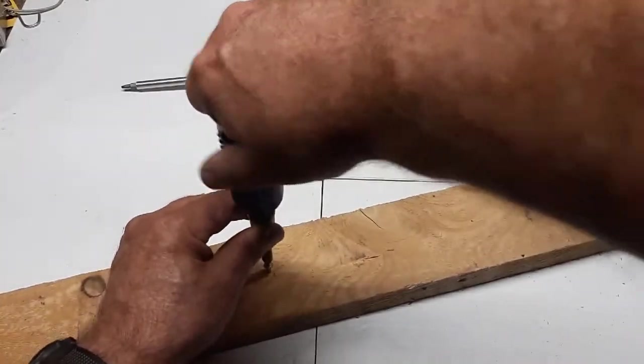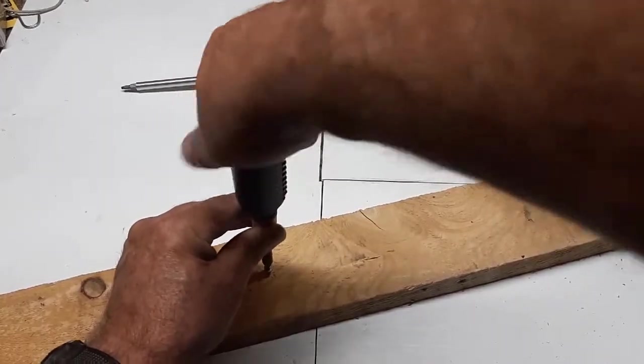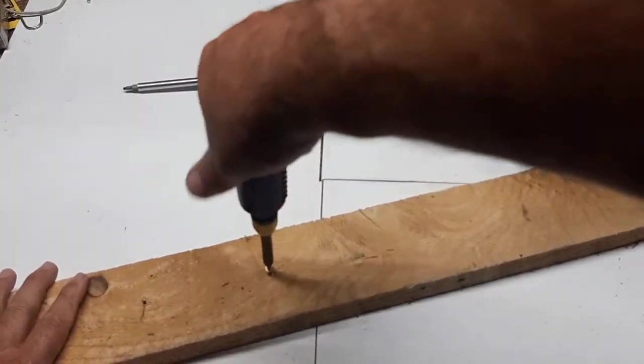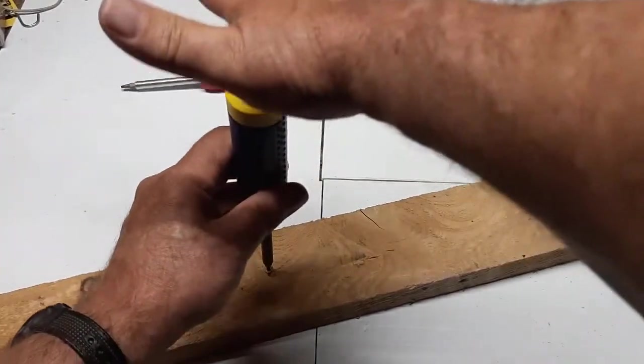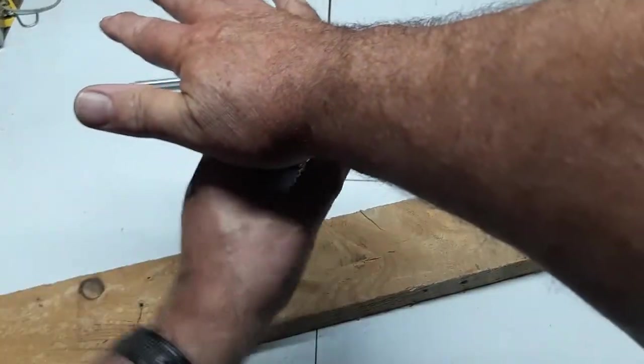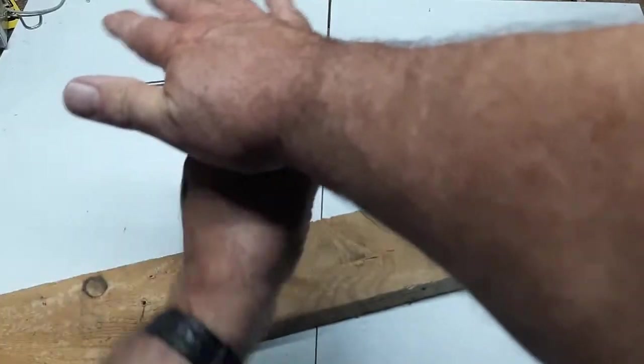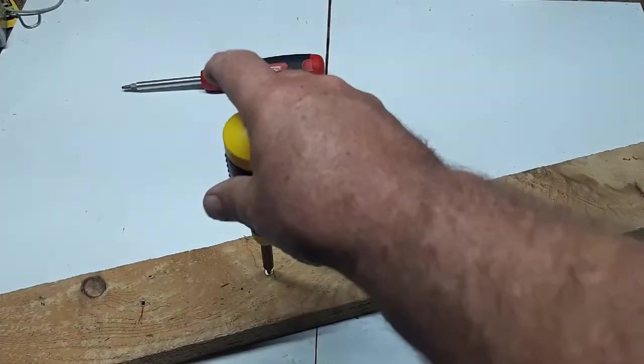A nice feature is this collar rotates here, so you can get it started. Hold the collar, get it started. Now you can get some oomph in here too—the cap rotates. See how much pressure I can get in here. That is a very nice feature of the Megapro Original.